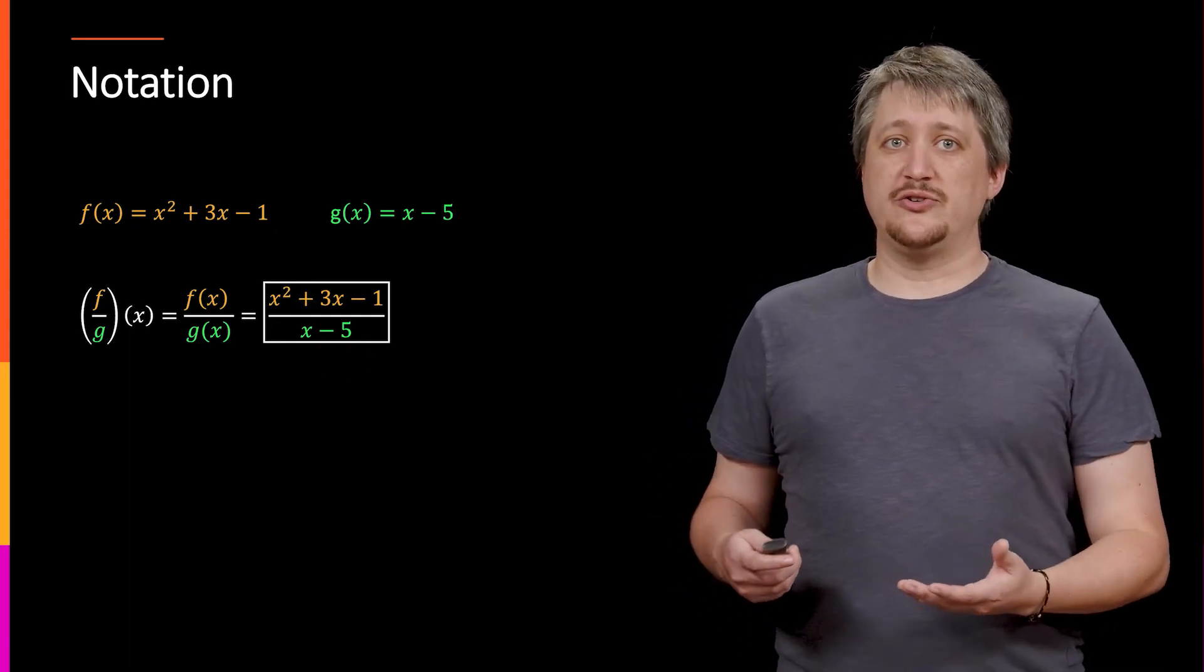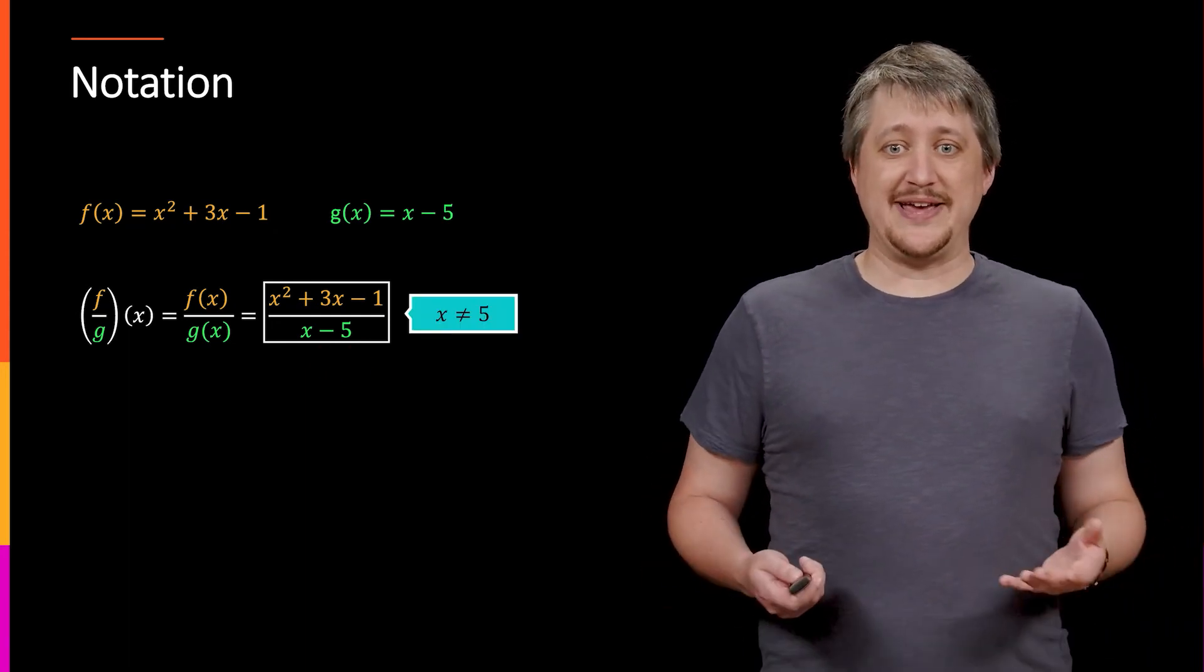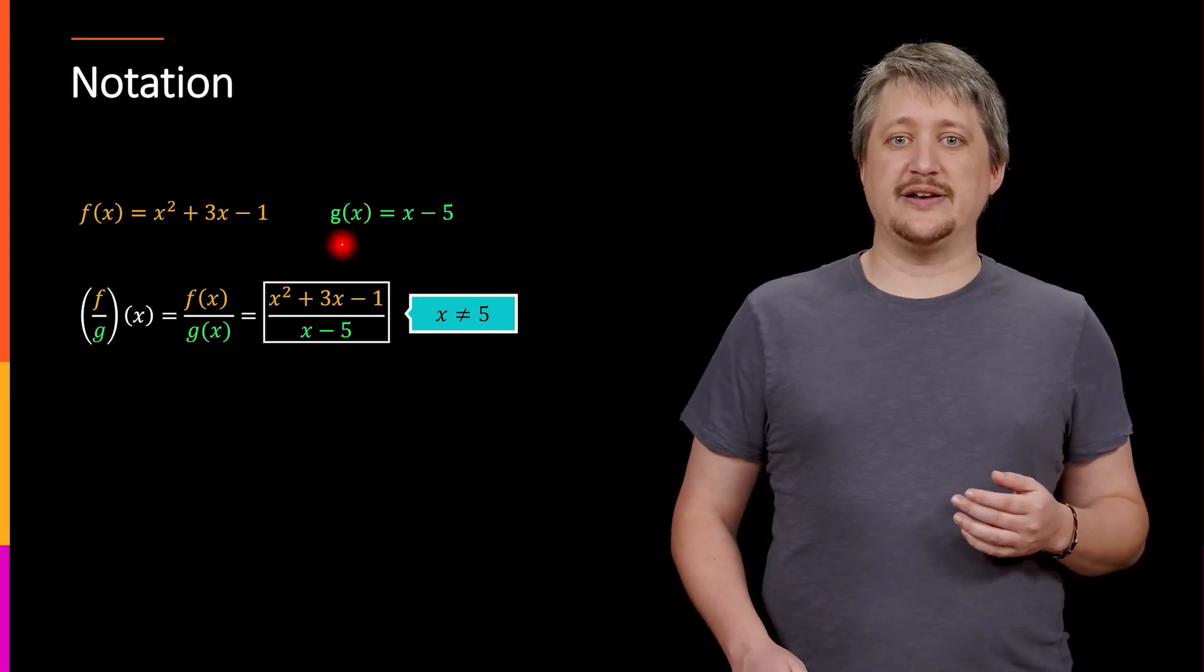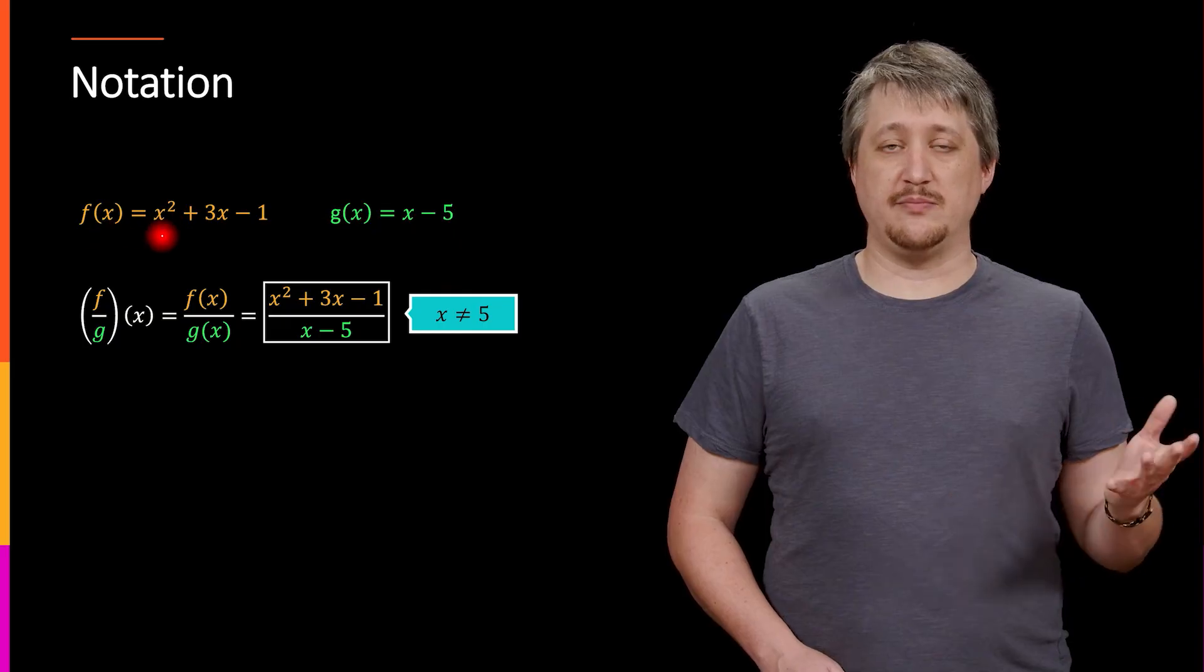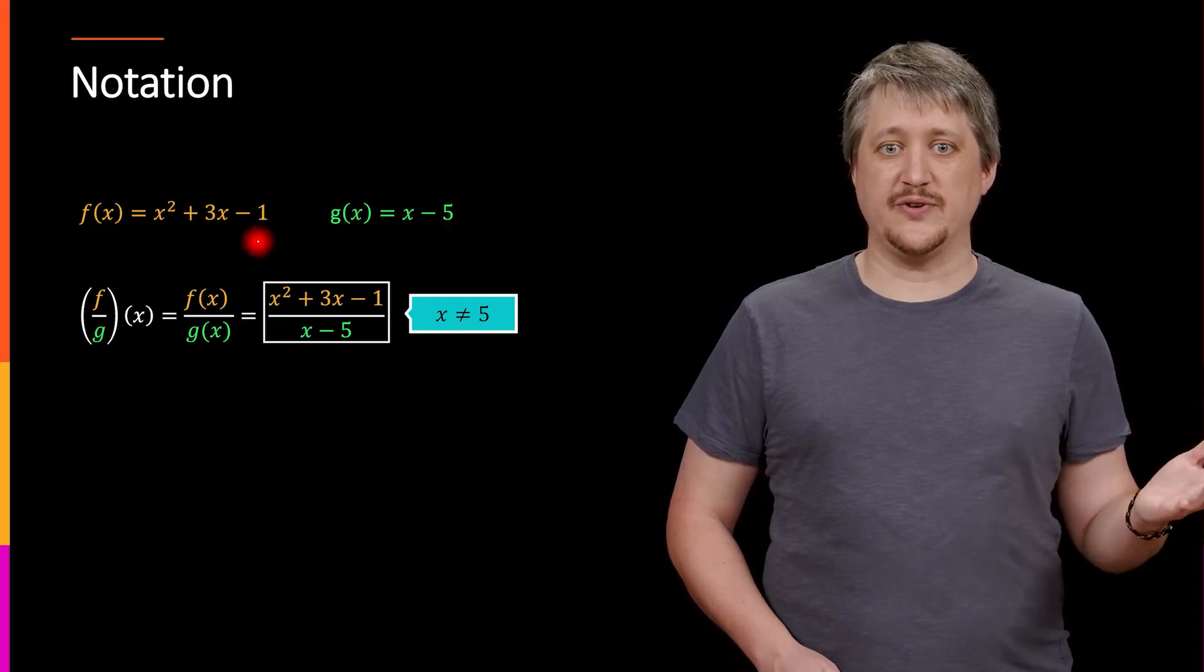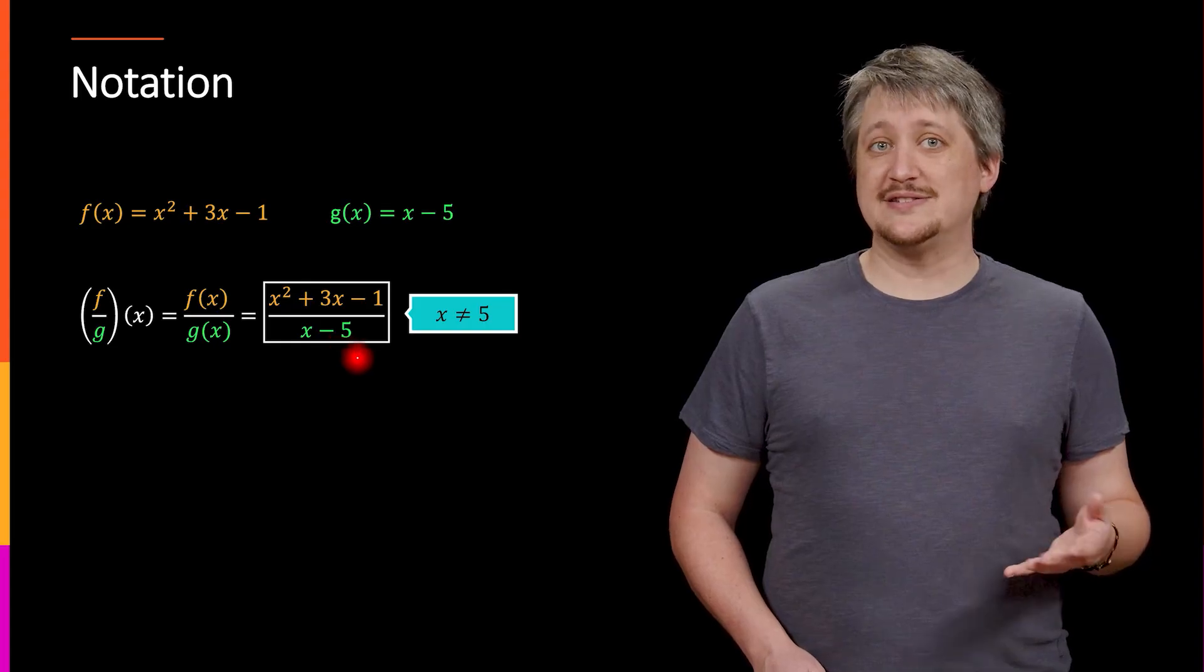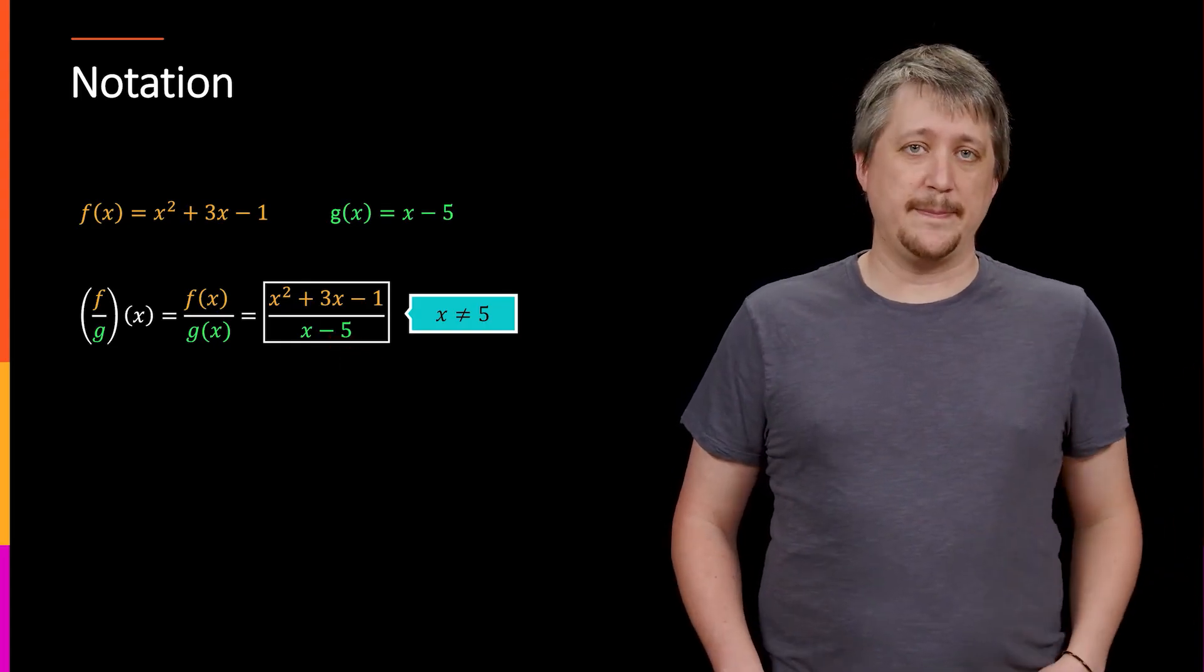But we want to make sure to make a note that x can't be 5 here. Because it could be 4, right? There's nothing wrong up here with x being 5 because they're just random polynomials, so I can plug in 5 just fine. But now I'm divided by one of them. So 5 no longer makes sense because I'd be trying to divide by 0.